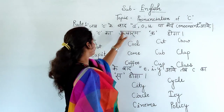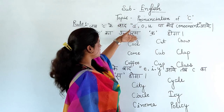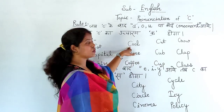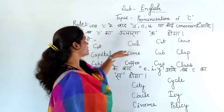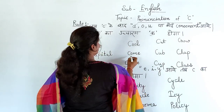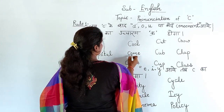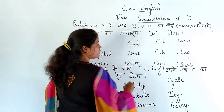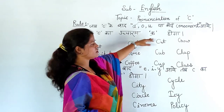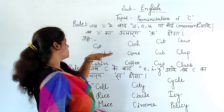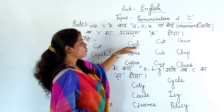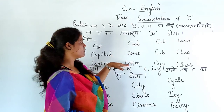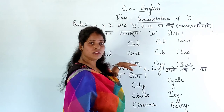In Cool, after C comes O. C-O-O-L, Cool. Then Come — C, O, M, E — here also after C comes O. And Coffee — after C comes O as well. So here also we will do the 'K' pronunciation of C. Cool, Come, Coffee. Okay?